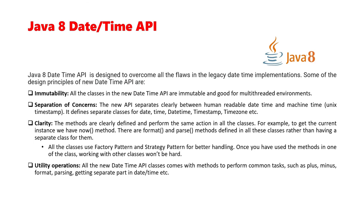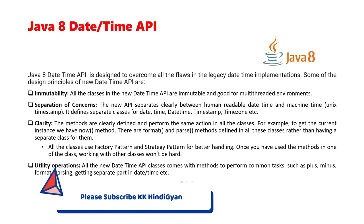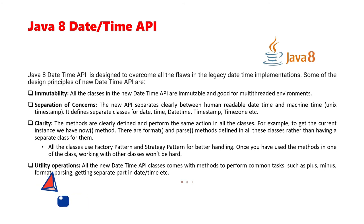Regarding utility operations, all the new DateTime API classes come with methods to perform common tasks such as plus, minus, format, parsing, and getting separate parts of a date and time. For example, from a date or datetime you can easily extract the day, year, month, or extract just the time portion. These operations are all very easy in the Java 8 DateTime API.